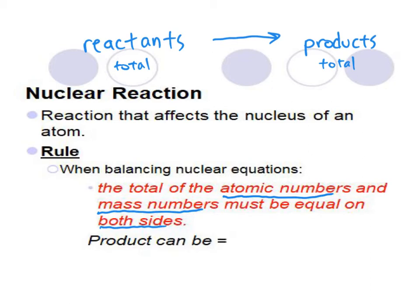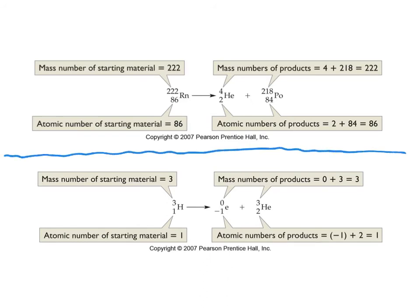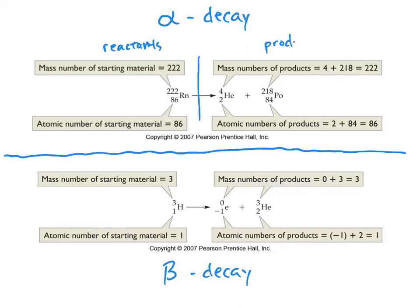The product itself can be a new element, so we'll have our periodic tables out to look at atomic numbers and see if it's changed to a new element. Here are two examples — on the top I have alpha decay, on the bottom I have beta decay. The arrow is in the middle: this side is the reactants, this side is the products. The top numbers — the mass numbers — and the bottom numbers must balance.